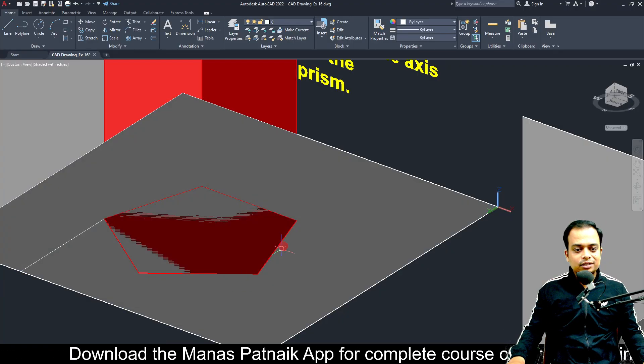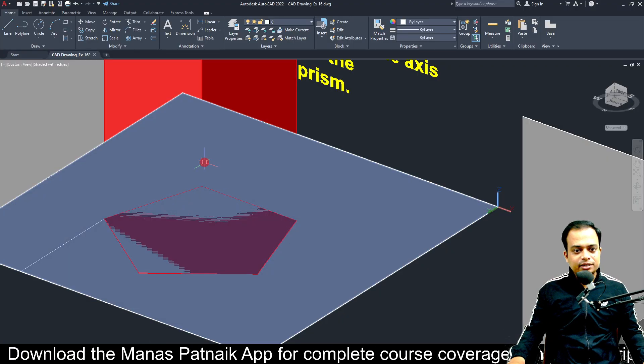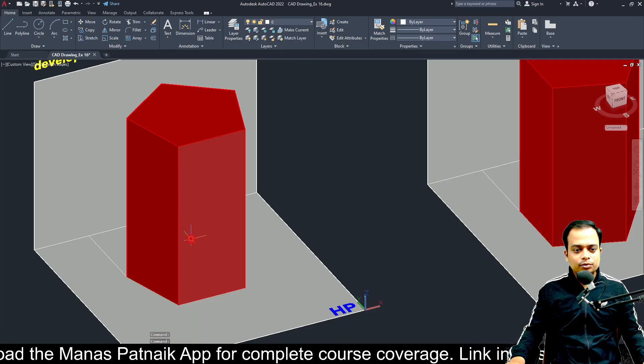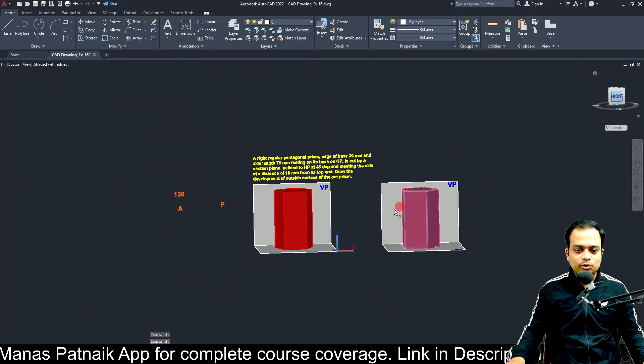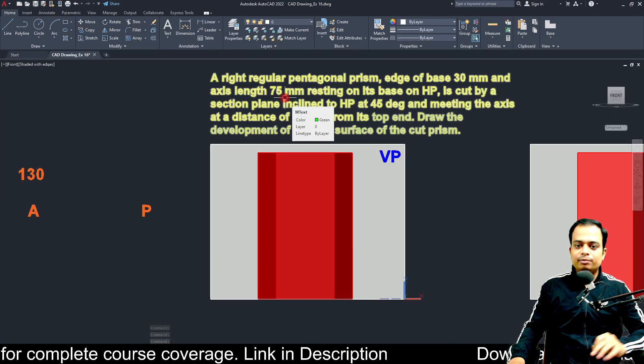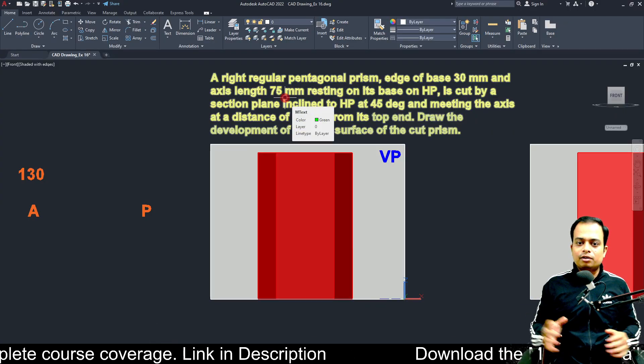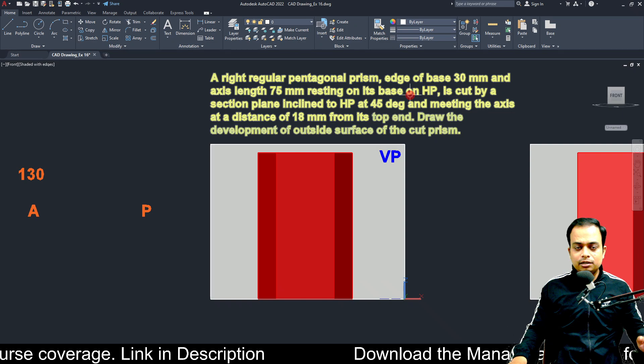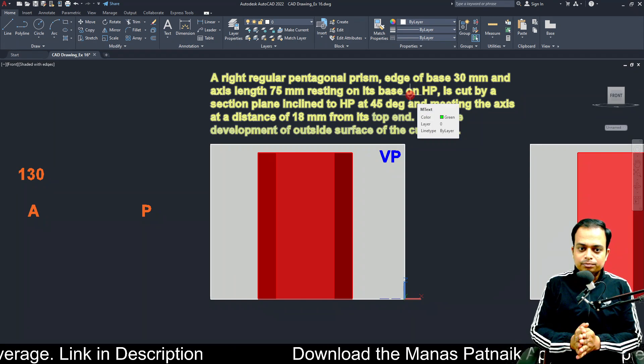So, all of these sides are 30 millimeters each. And if you just zoom out slightly and let me go to the front view. This height over here has been given as 75 millimeters. Another very important fact. How is it resting? Resting on HP.